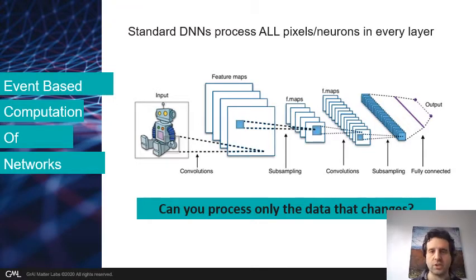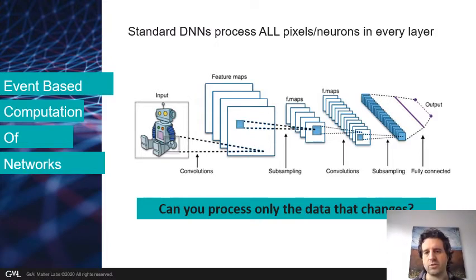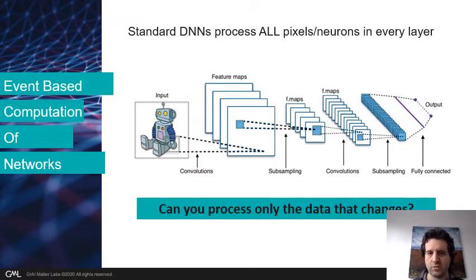So how do standard DNNs process the image? It's essentially that you move the image through several layers of a network and you're going to process everything that is in that image. But one thing you could say is: if something changes in the input image, then because of the connectivity everywhere in the network, I have to process everything.